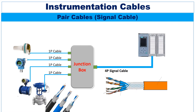The pair cables can be single pair type or multi-pair type. In a multi-pair cable, more than one pair is present and they can carry more than one signal. The multi-pair cables are laid between the signal junction box and the control system.